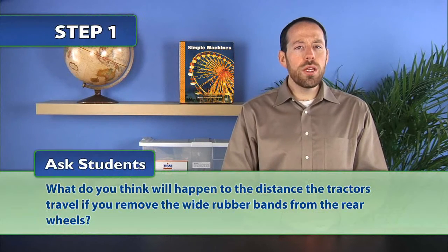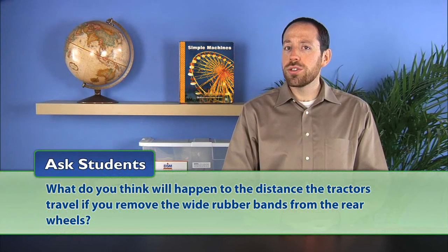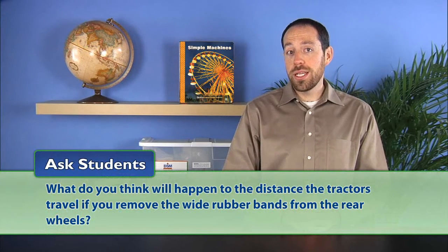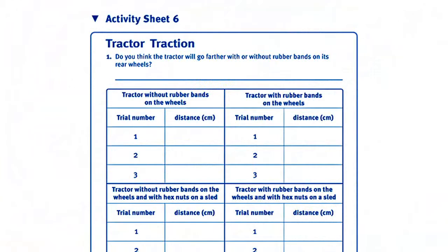To begin the activity, ask students, what do you think will happen to the distance the tractors travel if you remove the wide rubber bands from the rear wheels? Distribute a copy of Activity Sheet Six to each student and have them record their predictions.